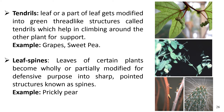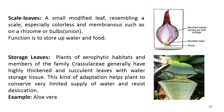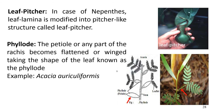Scale leaves are small modified leaves resembling a scale — colorless, thin, dry, stalkless, and membranous in structure. Their function is to protect the axillary bud. Sometimes scale leaves are thick and fleshy, as in onion, where their function is to store water and food. Storage leaves are found in plants of xerophytic habitats. Members of the family Crassulaceae generally have highly thickened and succulent leaves with water storage tissues, helping the plant conserve limited water supply and resist desiccation.